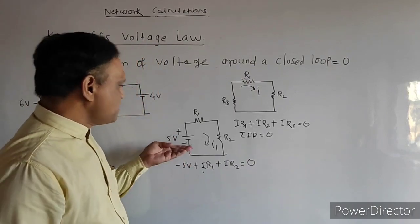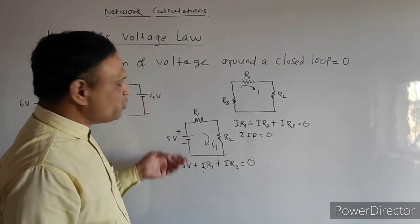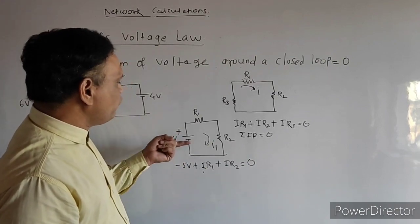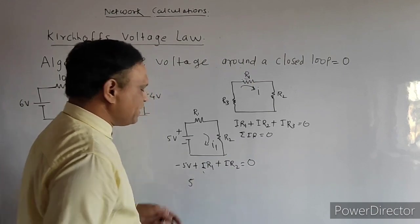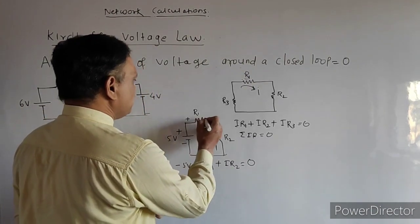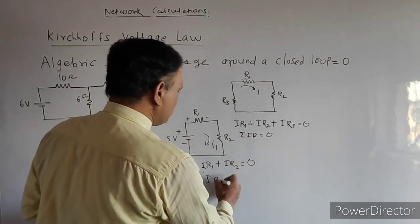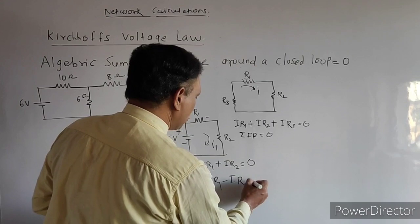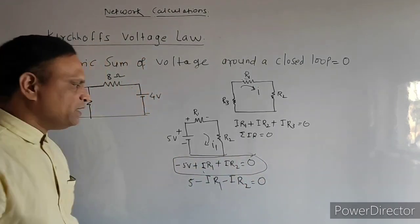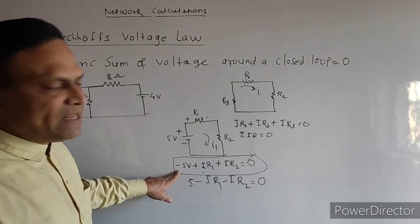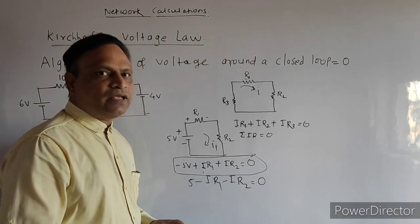It is not necessary to use minus 5 volt plus IR1 plus IR2 equals zero. You can also use the methodology where if we are travelling from negative to positive, there will be a voltage rise, so we write plus 5 volt; and from plus to minus there is a voltage fall, giving minus IR1 minus IR2. In solving problems, we will use the first methodology: if current enters from the negative side, assign its sign as minus, and remaining loop terms as positive.